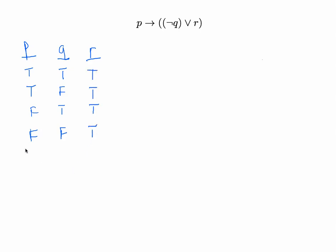For the next four rows, we're going to copy down the same first four rows for P and Q: true, true; true, false; false, true; false, false — and set R equal to false for those. That's going to give us all eight distinct rows for this truth table.